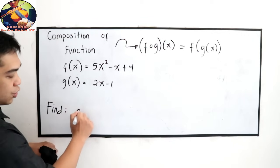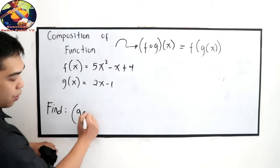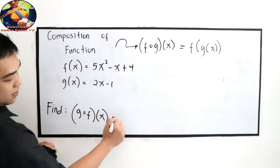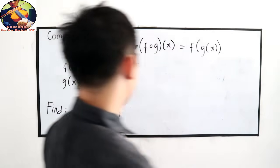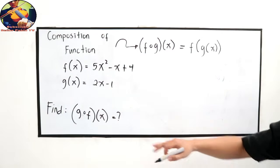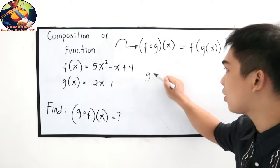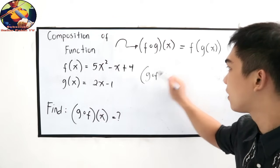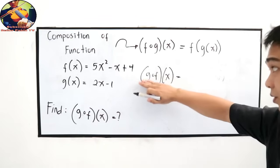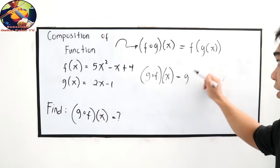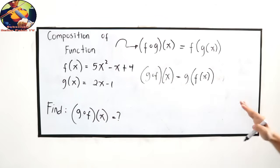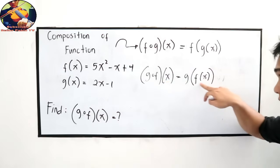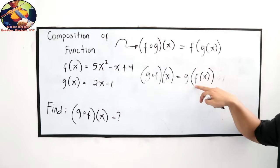Find g composed of f of x. That's what we need to find. So let's solve. We know that g composed of f of x is equal to g of f of x. So the one closer to x is what we take. We get their relationship. Okay.